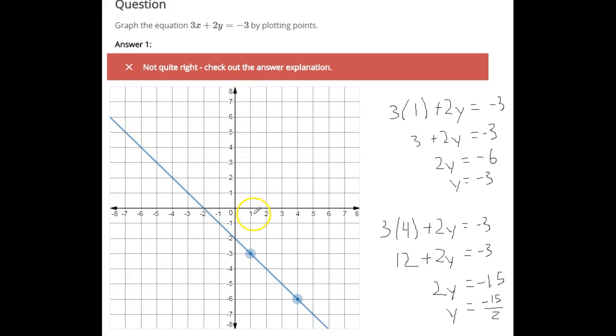So first, if I choose x to be 1, which this is where x is 1, let's see if that's the right point. So you plug a 1 in for x, and then we're going to solve and see what y would be. So 3 times 1 is 3, and then subtract 3 from both sides. So you get 2y is negative 6, and divide both sides by 2, and you get y should be negative 3. So that is the correct point.